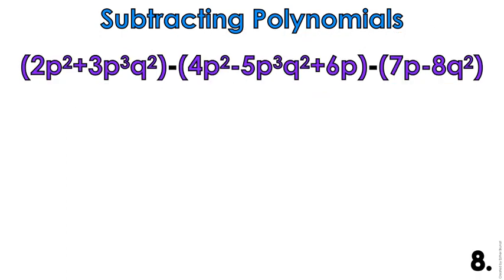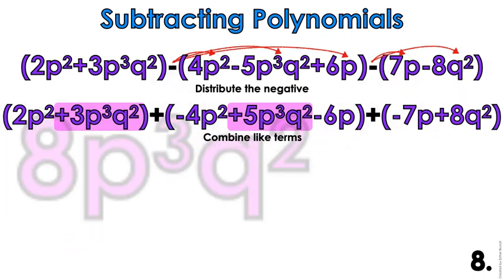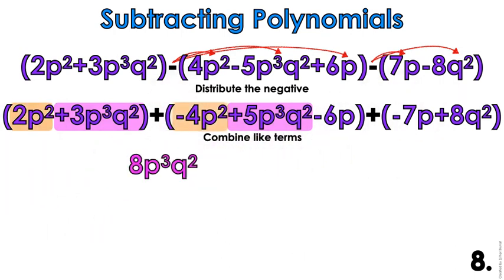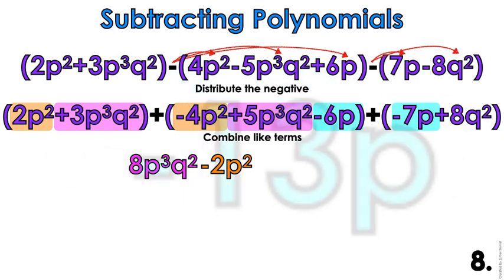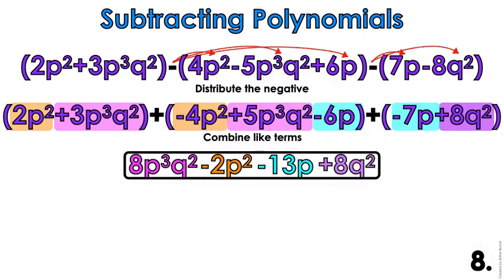Number 8 out of 10 — pause the video and do it on your own first if you're feeling lucky. Distribute the negatives, change all those signs. Now combine like terms: 8p-cubed q-squared. For the p-squares: 2 minus 4 gives me negative 2p-squared. For the p's, that gives me negative 13p. And then our lonely 8q-squared comes down at the end. That is our final answer.